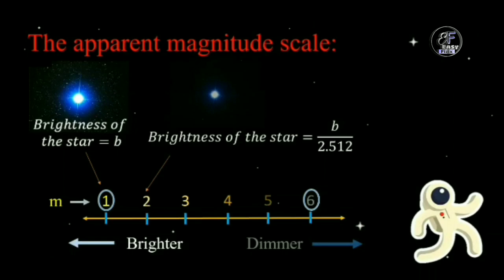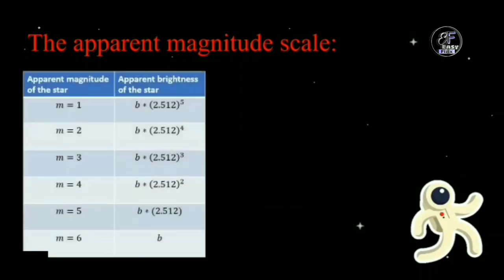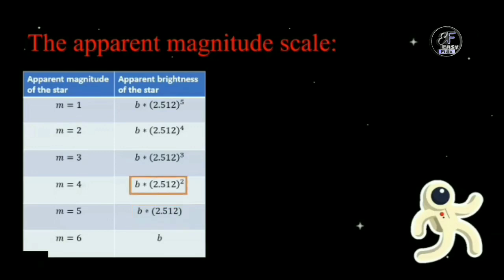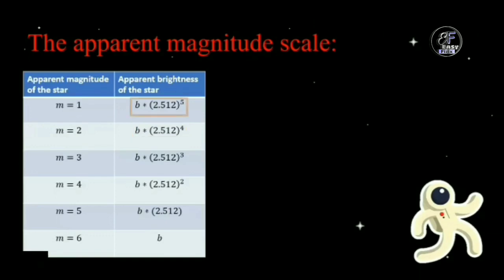We can understand this with the help of this table. Suppose the brightness of a magnitude 6 star is B. Then the brightness of a magnitude 5 star becomes 2.512 times B. Similarly, the brightness of a magnitude 4 star is 2.512 squared times B. We can see the brightness of stars of other magnitudes in the same way. So a magnitude 1 star is 100 times brighter than a magnitude 6 star.